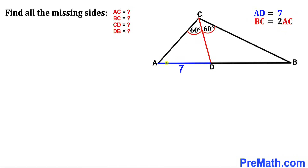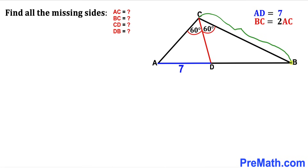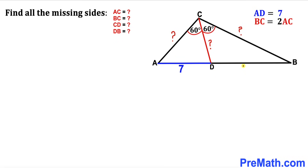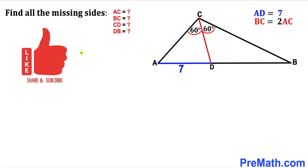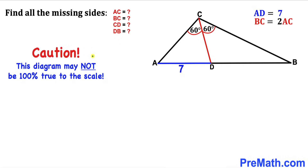In this video we have triangle ABC along with angle bisector CD. Angle ACD is 60 degrees and angle BCD is 60 degrees as well. Side length AD is 7 units and side length BC is twice side length AC. We are going to calculate the missing sides: AC, BC, CD, and DB. This figure may not be 100% true to scale.